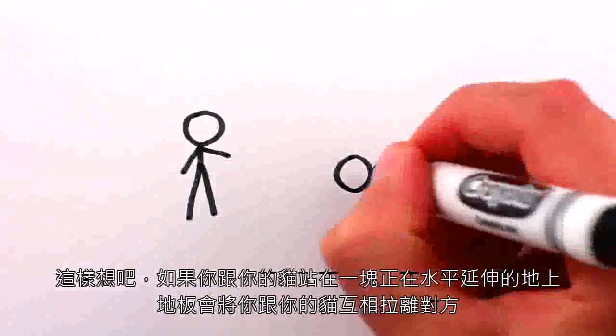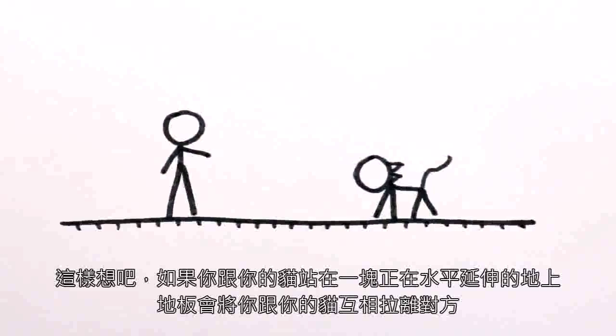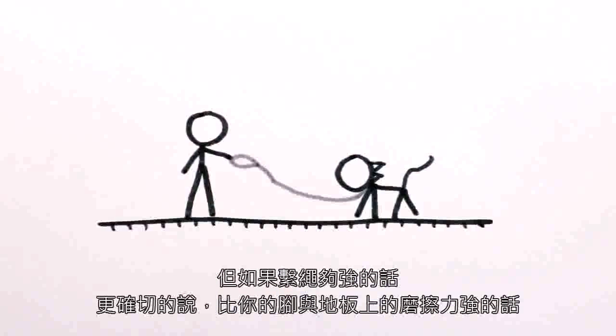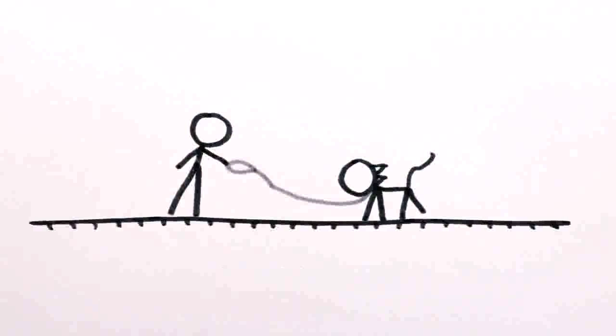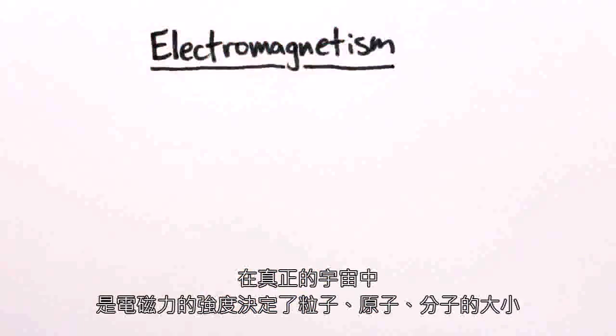Think of it like this. If you and your cat are standing on a piece of ground that starts to stretch horizontally between you, the ground will pull you and your cat away from each other, but if the leash is strong enough, in particular if it's stronger than the friction force between your feet and the ground, it'll hold you and your cat together as space expands beneath you.